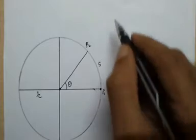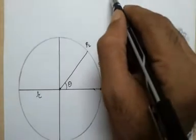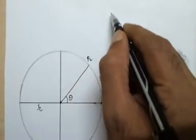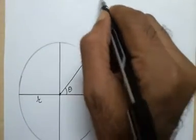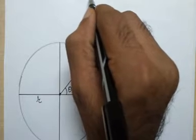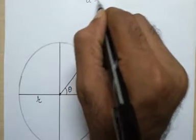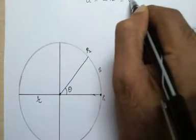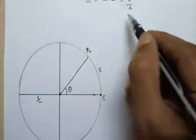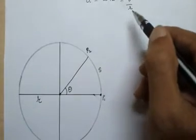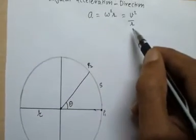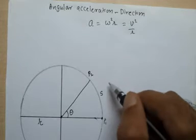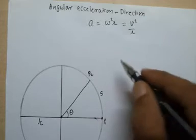We will look at velocities, using what we discussed in the previous video on magnitude. The magnitude of acceleration is omega squared r, which is equal to v squared upon r. In this video we are looking at the direction of angular acceleration.